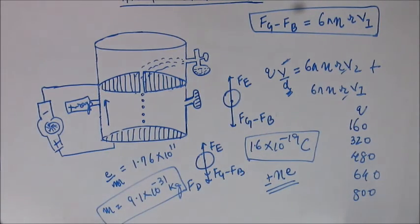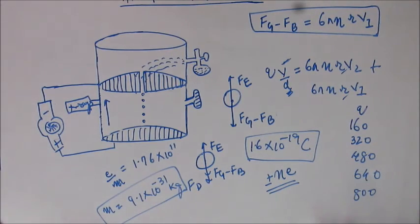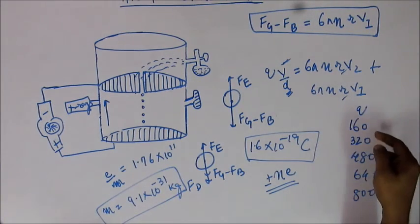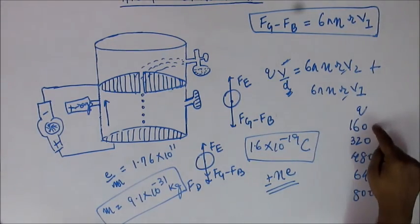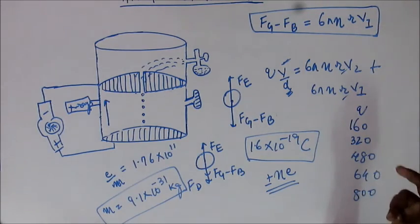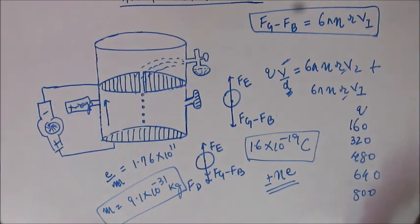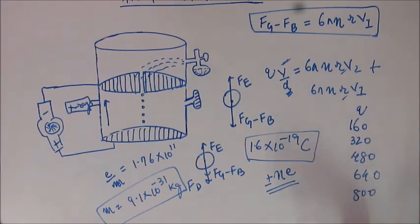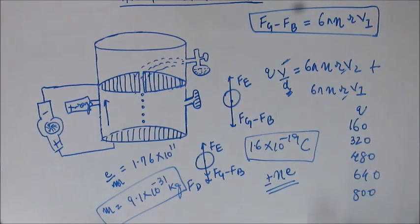One more conclusion you can draw from this data is that electrons have particle nature. There is one particle of electron — 160 zeptocoulombs. The next higher value is 320. There is nothing in between, so you cannot have one-and-a-half electrons. One electron, then directly two electrons, then three, then four — discrete values, with no continuous supply of charge as you would have in the case of a wave. This also signifies the particle nature of the electron.